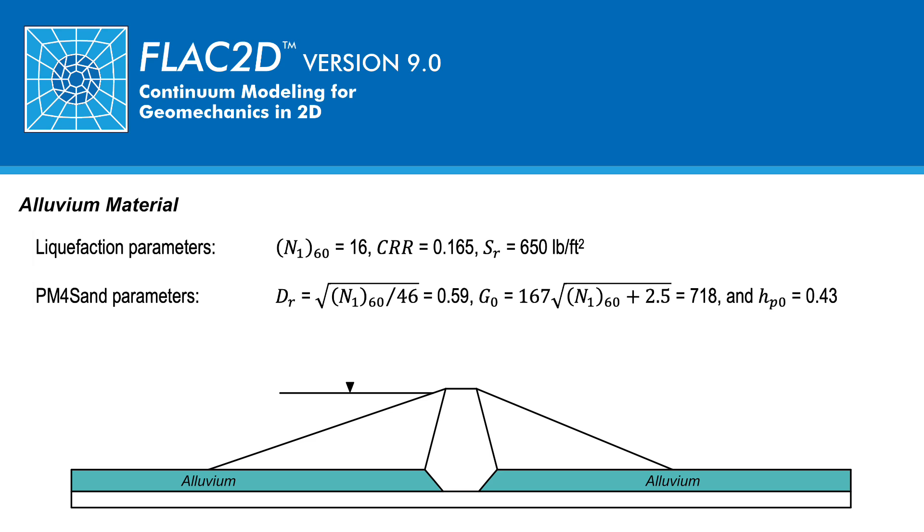The primary material parameters for the PM4 sand constitutive model, relative density, G0 and HP0 were chosen to be consistent with a soil with N160 equal to 16 and CRR equal to 0.165. The residual strength is not a material parameter in the PM4 sand model but is used in a post-earthquake analysis with the Mohr-Coulomb model.